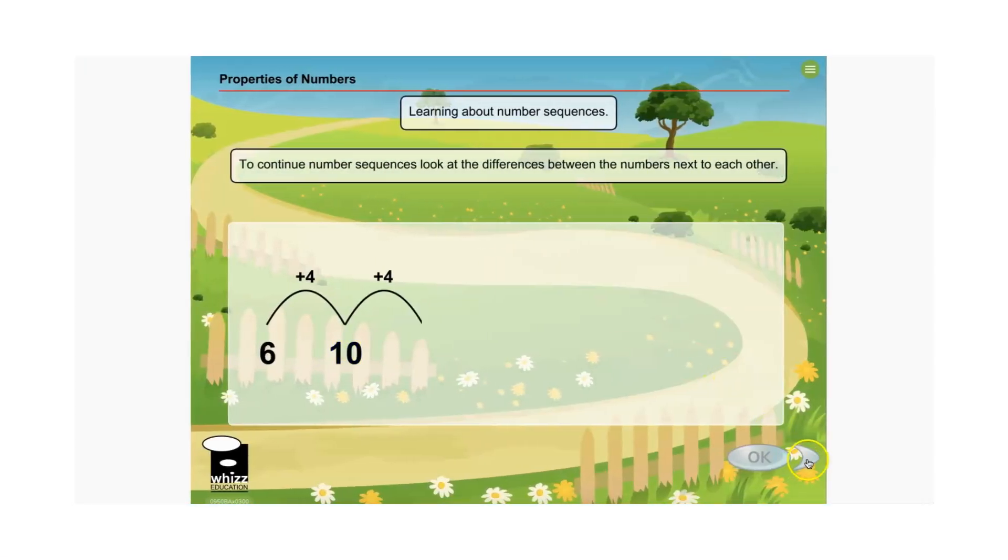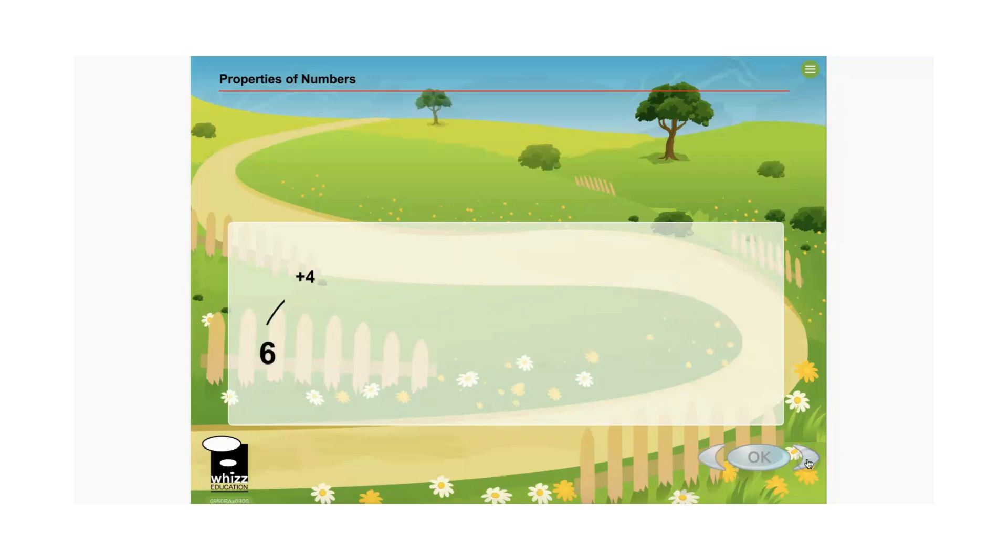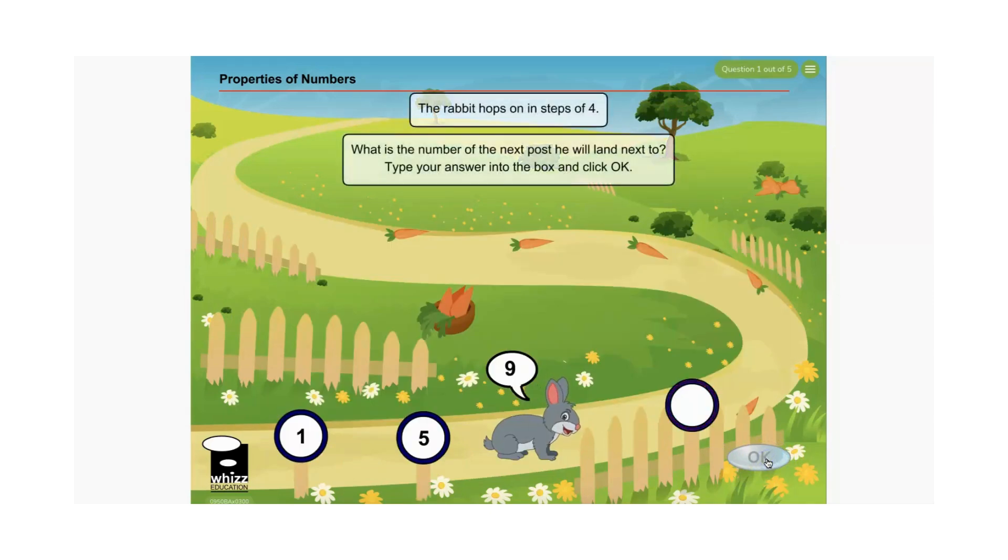Let's take a look at a lesson. Each lesson starts with a short teaching section and models the concept, just as their teacher would do. Your child can learn at their own pace with the arrows, and when they're ready, they can start to answer questions.